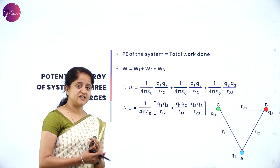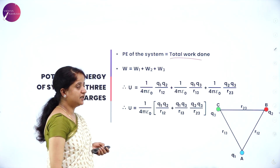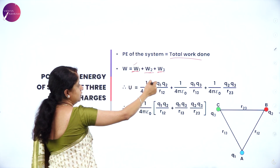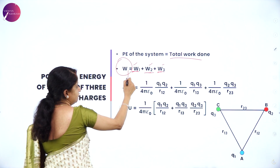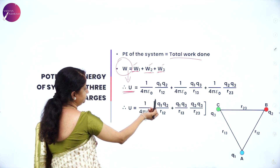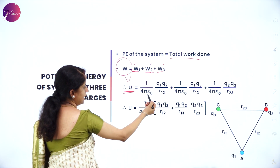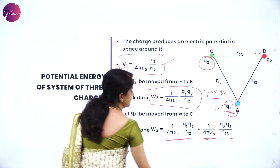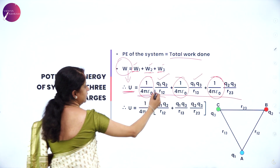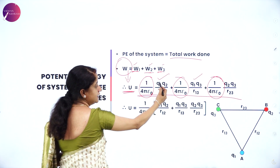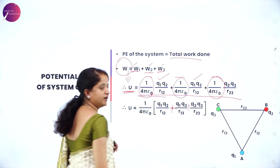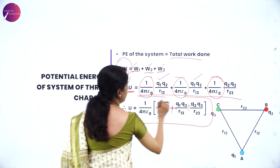The potential energy of the system is calculated by finding the total work done: W = W1 + W2 + W3. This total work is stored as potential energy U. Since W1 = 0, we get U = (1/4πε₀) [Q1Q2/R12 + Q1Q3/R13 + Q2Q3/R23]. This is the expression for potential energy for the system of three charges.